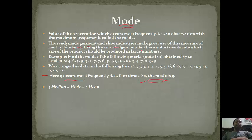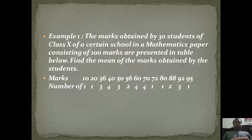The retail government and shoe industries make great use of this measure of central tendency. Generally, the industry decides which size of product should be produced in large numbers. Now there is a formula: 3 × median = mode + 2 × mean. So clear - mean, median, and mode.